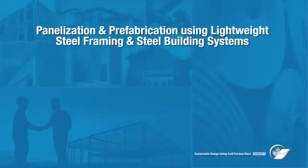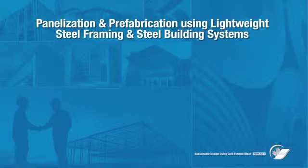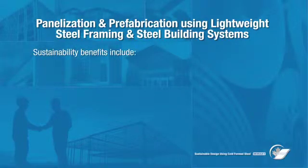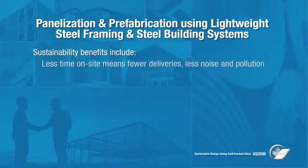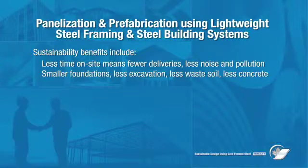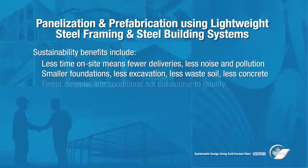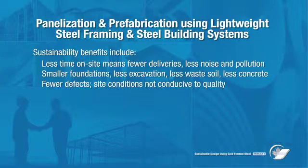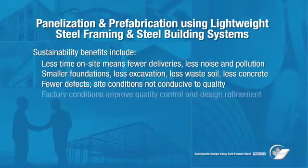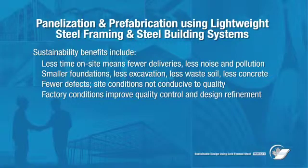Prefabrication, panelization, and steel building systems also offer considerable potential for sustainability benefits, including reduced site impacts. Spending less time on site reduces disruptions from site deliveries while decreasing noise and pollution. These methods also require smaller foundations, less excavation, less waste soil removal, and less concrete in the ground. Fewer defects result because site conditions are not conducive to quality workmanship, whereas factory conditions provide better working conditions and a more durable building, improving quality control, supervision, and checking procedures.